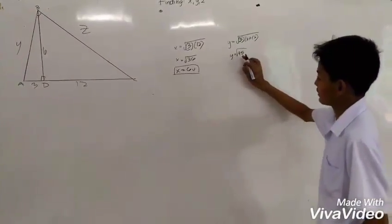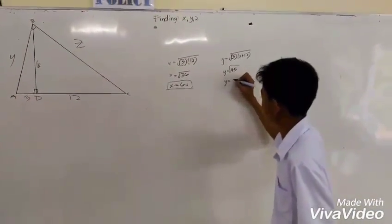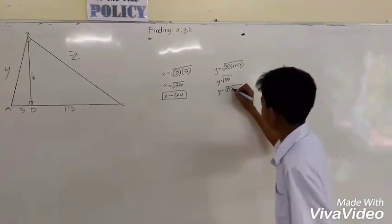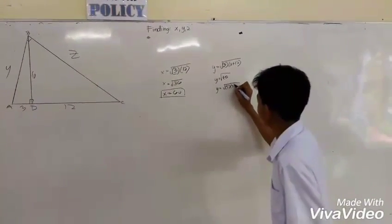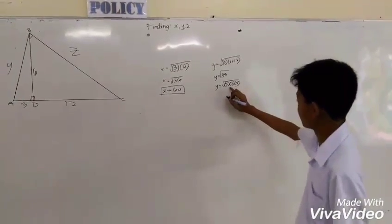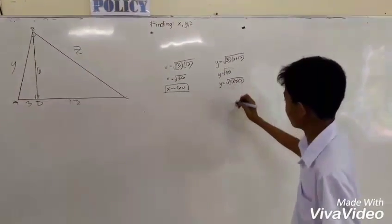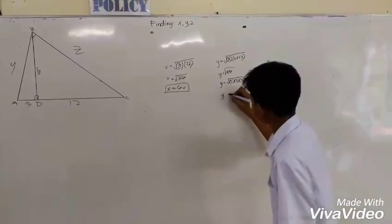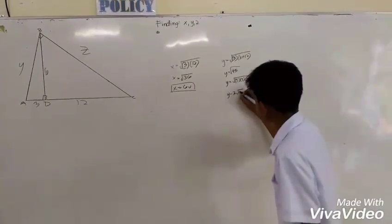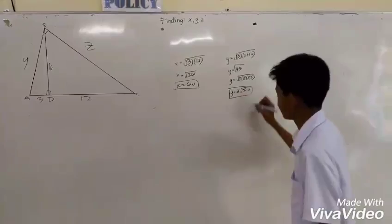To extract the square root of 45, which is not a perfect square, we must factor it. 45 equals 5 times 3 times 3. There are two same numbers, so the answer is 3 the square root of 5 units.